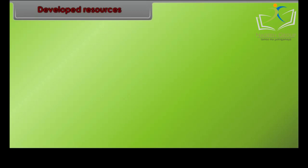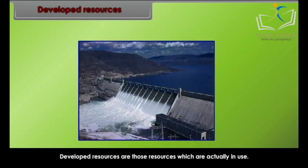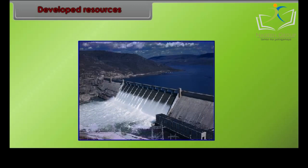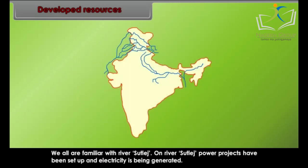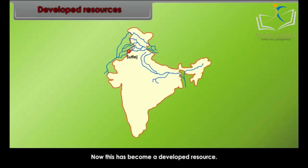Developed resources are those resources which are actually in use. For example, on river Sutlej, power projects have been set up and electricity is being generated. This has become a developed resource.